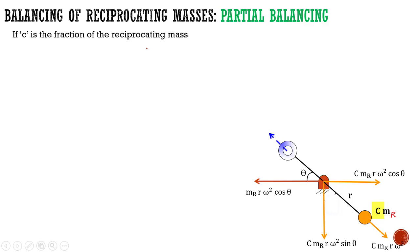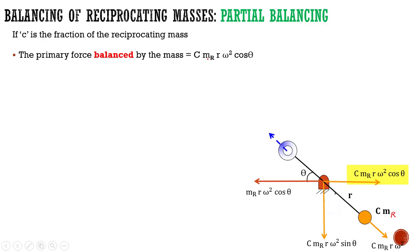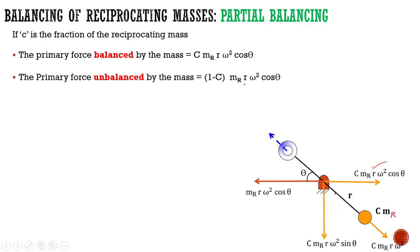C is the fraction of reciprocating mass. The primary force balanced by the mass is c·mr·r·ω²·cosθ. So, the amount of force balanced by this mass is exactly equal to c·mr·r·ω²·cosθ. The amount of force which remains unbalanced is (1 - c)·mr·r·ω²·cosθ.